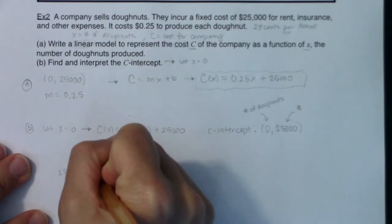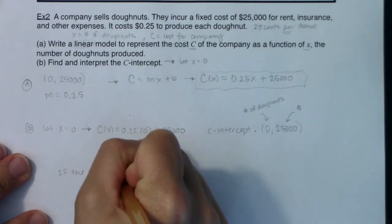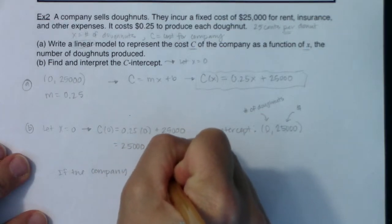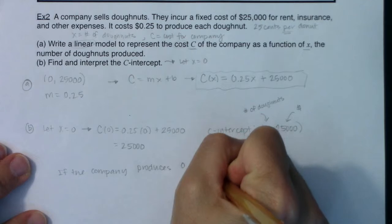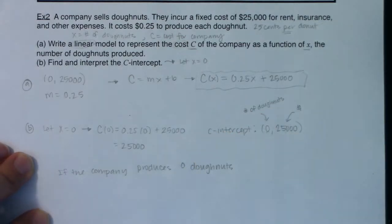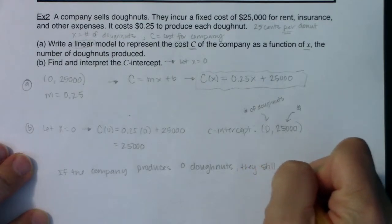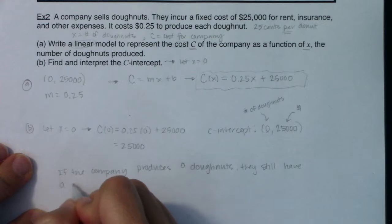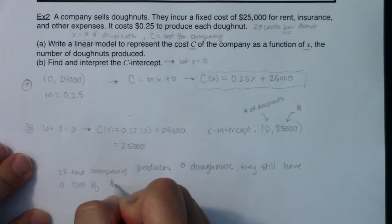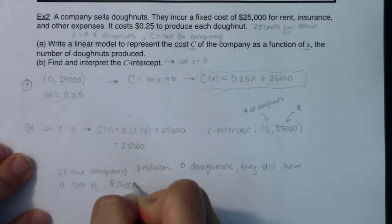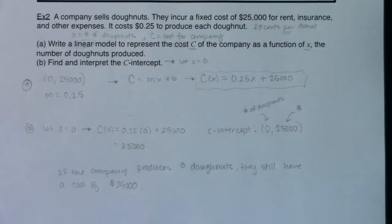So if the company produces zero donuts, they still have a cost of $25,000. So let's write this out: if the company produces zero donuts, they still have a cost of $25,000. And as you see in my interpretation, you can see both units in there. You see donuts and dollars, and you see me referencing the fact that it is a C-intercept. That means x was zero, and there was my C-value.